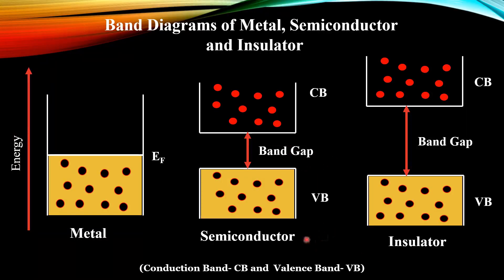Insulators look very similar to semiconductors; however, in this case the band gap is quite high — so high that the carriers from the valence band cannot be excited to the conduction band. As we already said, we primarily work on semiconductors, so let's see how we can excite carriers from valence band to conduction band and in turn produce luminescence, which is the primary reason for the optical properties of nanomaterials.